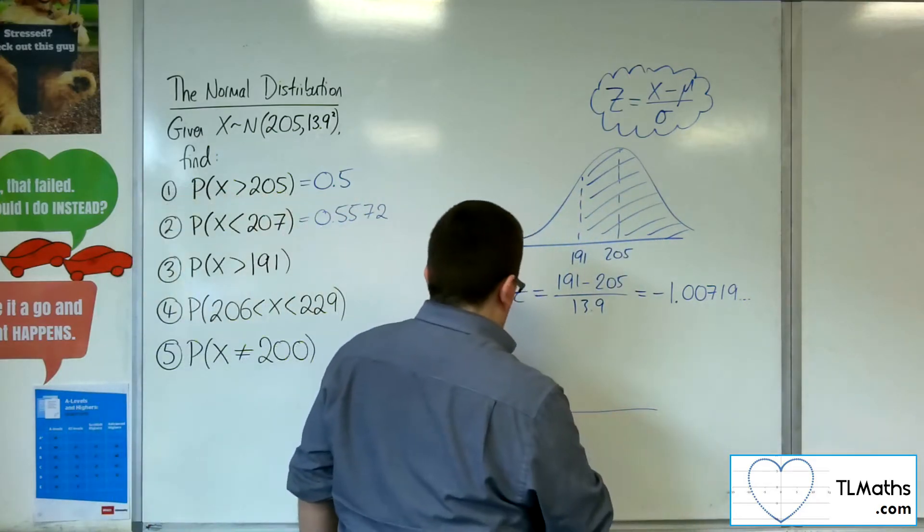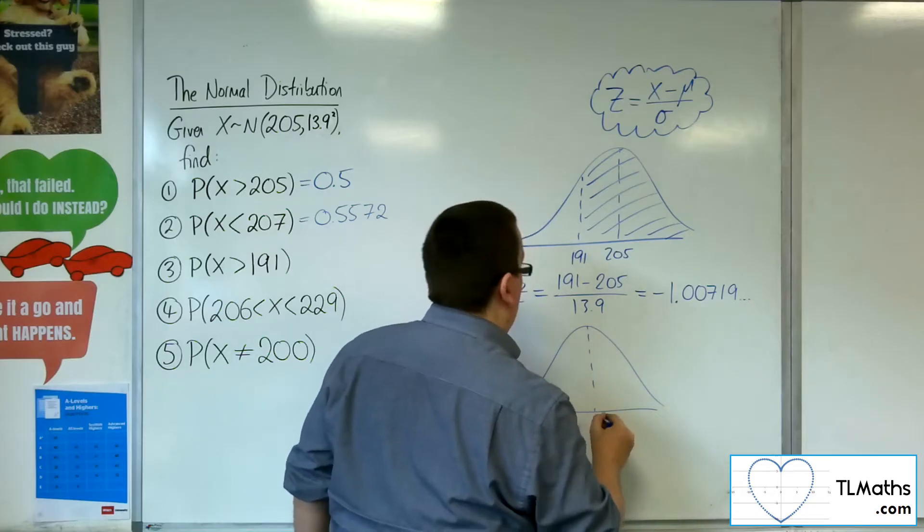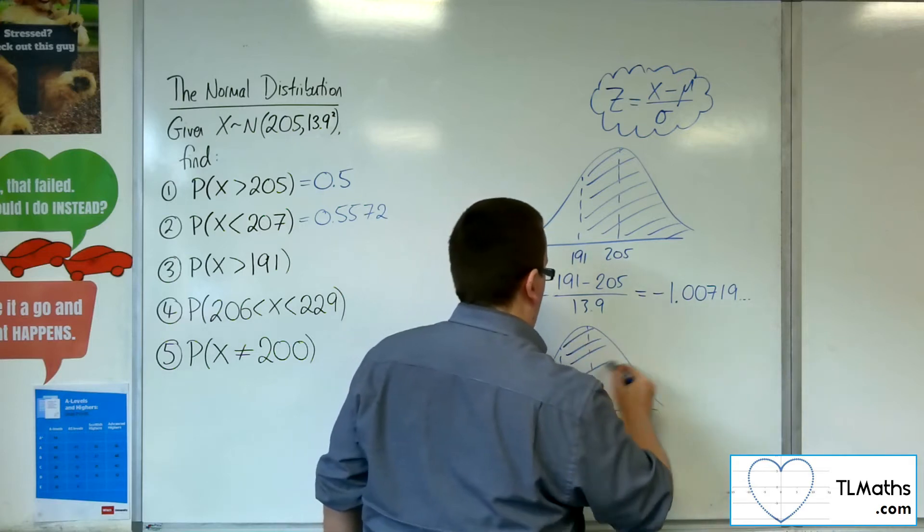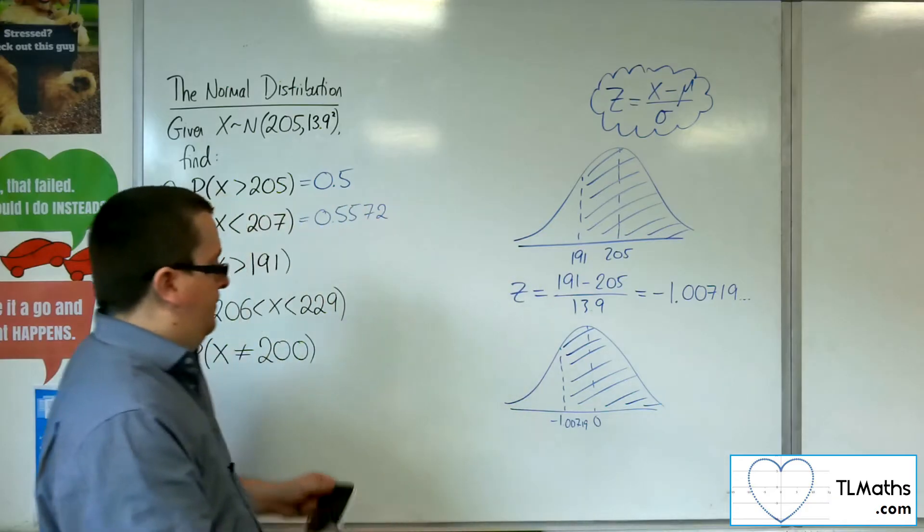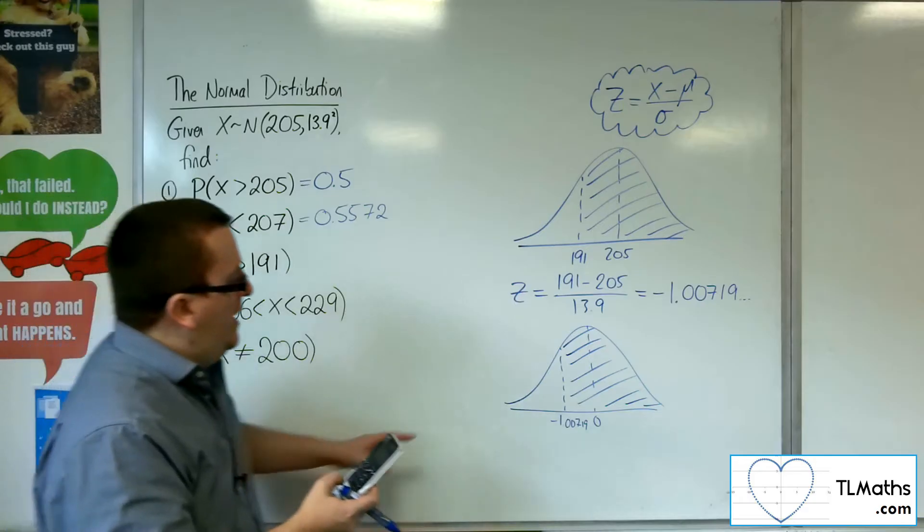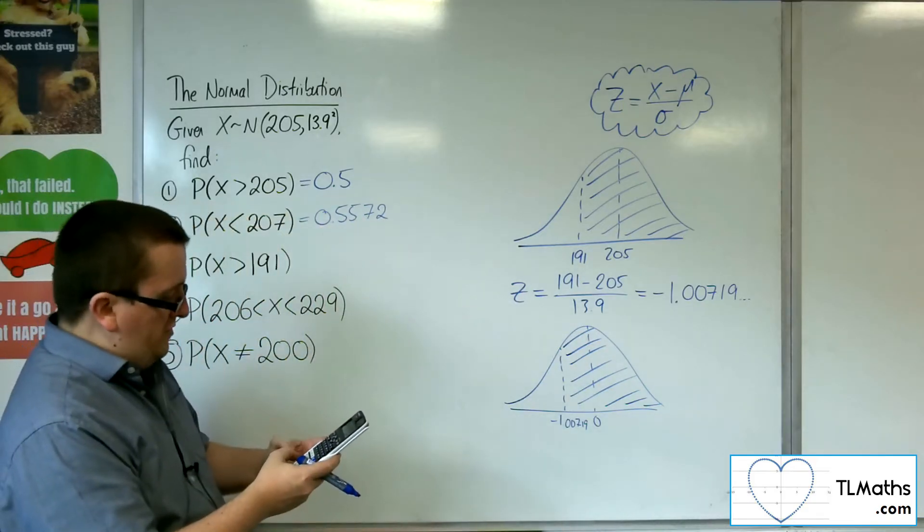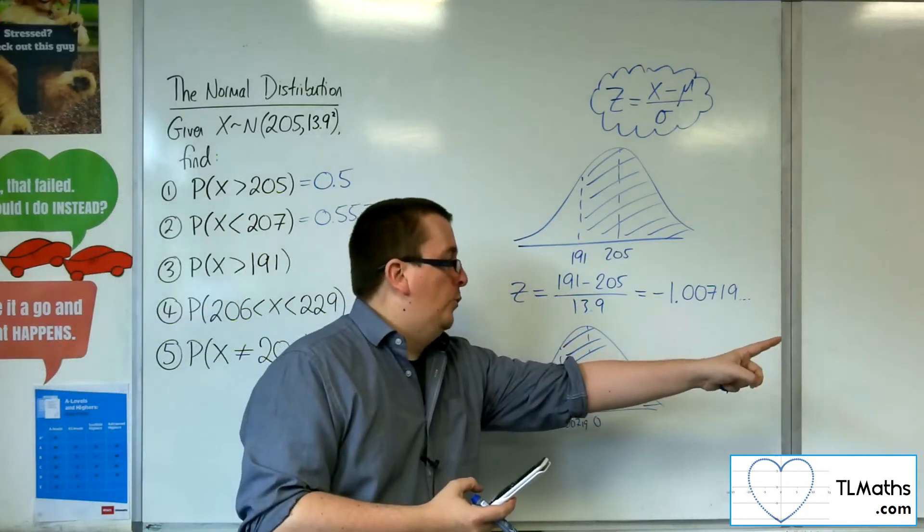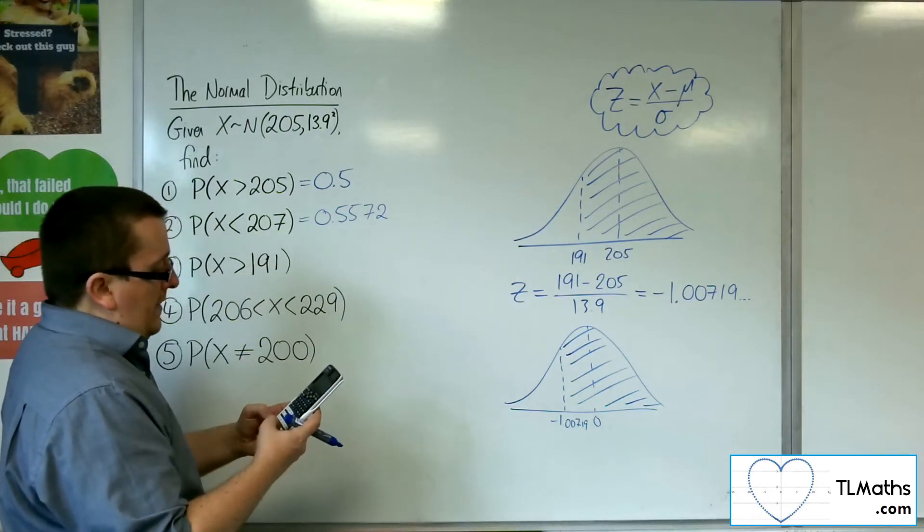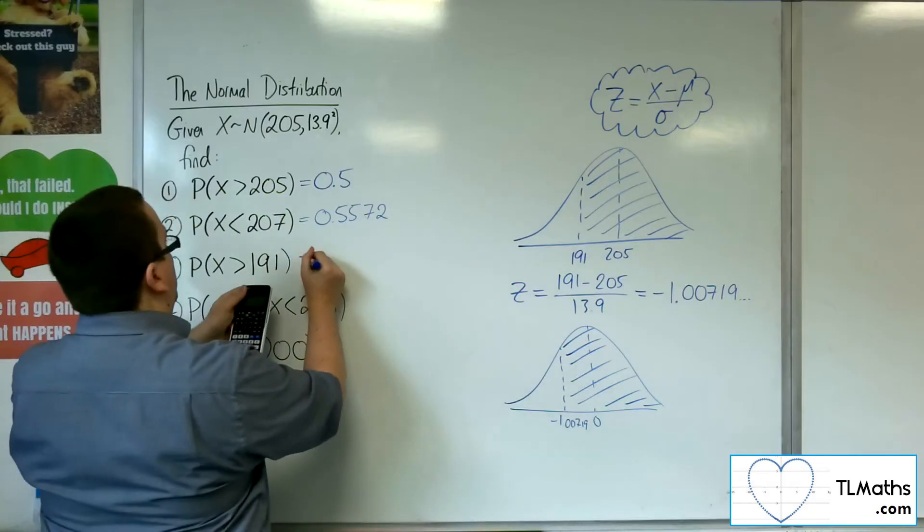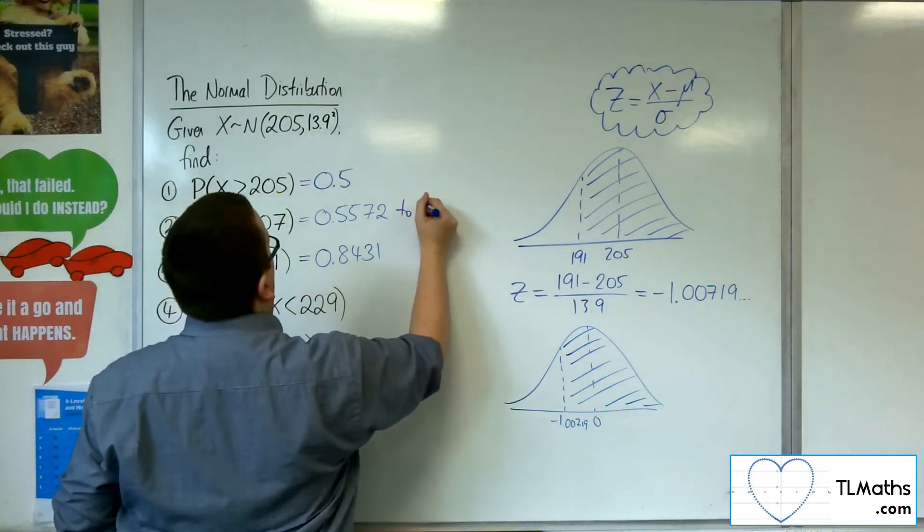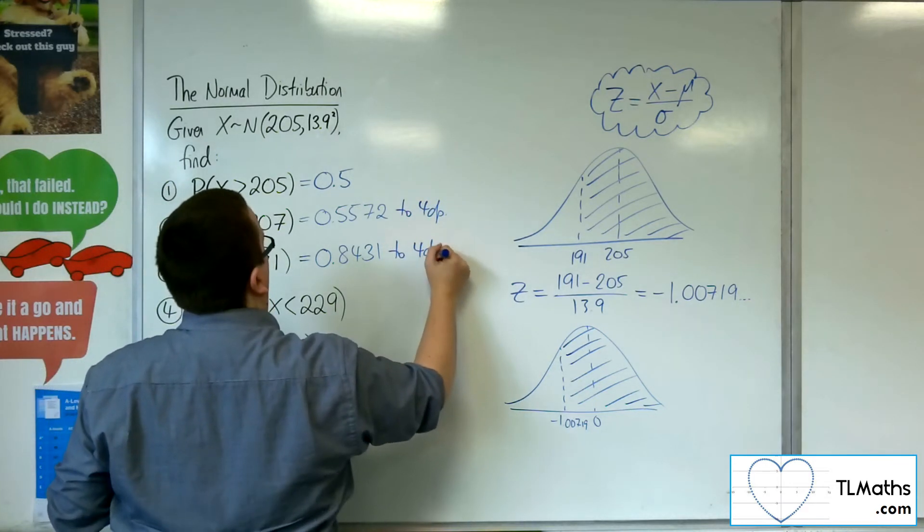So on my standard normal curve, there's 0, there's my minus 1.00719. I want to find that area. So on the normal CD, my lower this time will be the minus 1.00719, the upper is 10 standard deviations up, sigma is 1, and the mean is 0. And I get 0.8431 to 4 decimal places.